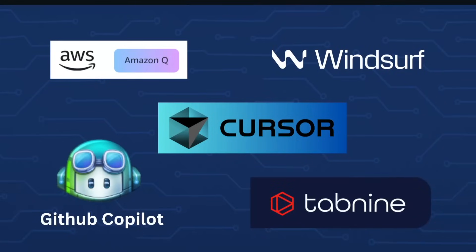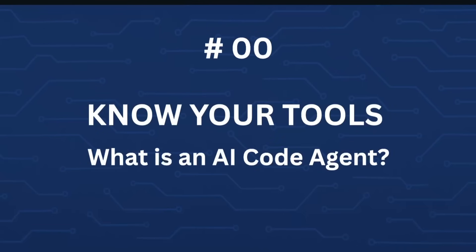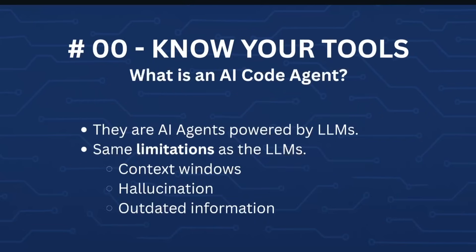Let's get started with a basic rule: know your tools. Your tool for vibe coding is an AI code agent like Cursor, GitHub Copilot, Windsurf, etc. These AI agents are powered by LLMs, so they share the same limitations — for example, context windows. They forget your instructions and previously provided information, they hallucinate and make things up, asserting falsehoods as if they were true, and sometimes they may not have up-to-date information.